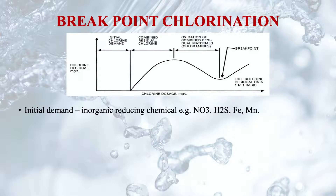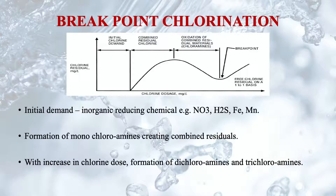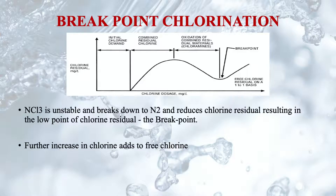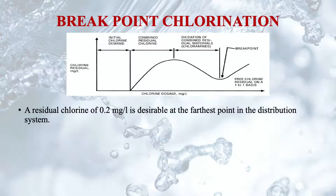Breakpoint chlorination involves a laboratory experiment where chlorine is added to water and residual chlorine is measured. There are four stages visible from the figure. In the first stage — initial demand — inorganic reducing chemicals including nitrates, hydrogen sulfide, iron, and manganese react with chlorine, consuming almost all the chlorine added. In the next phase, chloroamines are formed creating combined residuals: first monochloroamines, then with increasing dose, dichloroamines and trichloroamines or nitrogen trichloride. Nitrogen trichloride is unstable, breaks down to nitrogen, and reduces the chlorine residual — creating the low point called the breakpoint. Further increase in chlorine then adds to free chlorine.